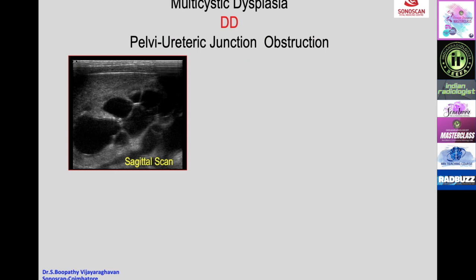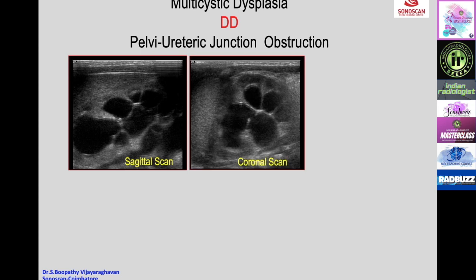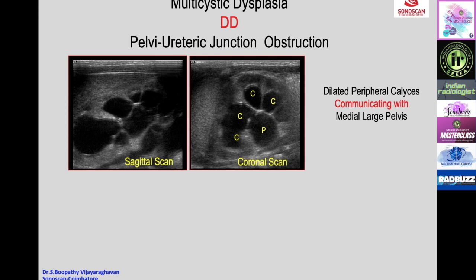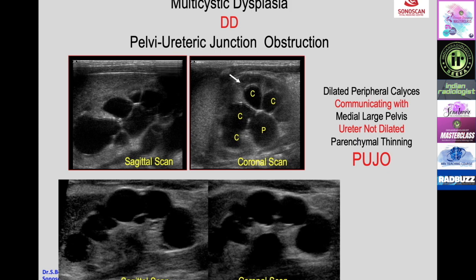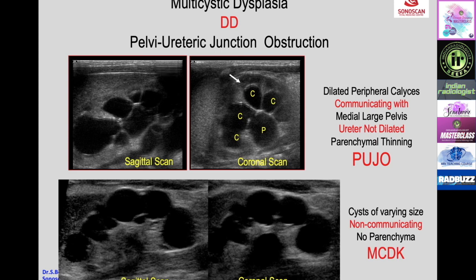Multicystic dysplastic kidney must be differentiated from PUJ obstruction, which can mimic it on sagittal scan. The crucial technique is a coronal scan: in PUJ obstruction, the peripheral calyces communicate with the medial large pelvis, the ureter is not dilated, and there is thinned surrounding parenchyma. In contrast, in multicystic dysplastic kidney the cysts are of varying size, non-communicating—this is the crucial differentiating point—and there is no surrounding parenchyma.